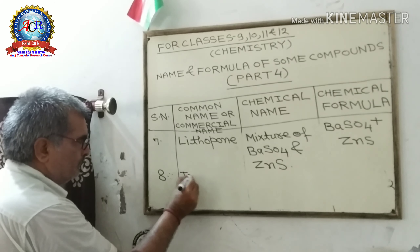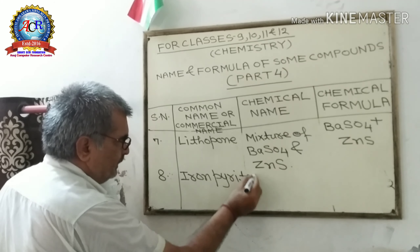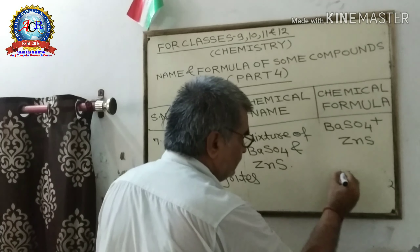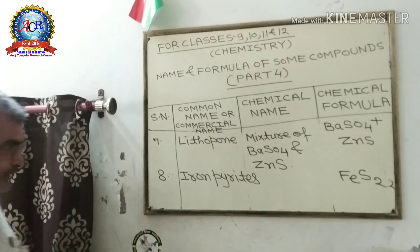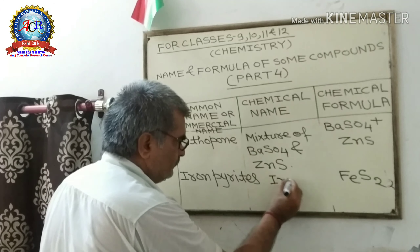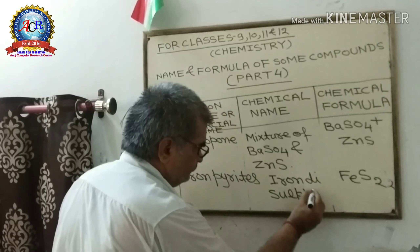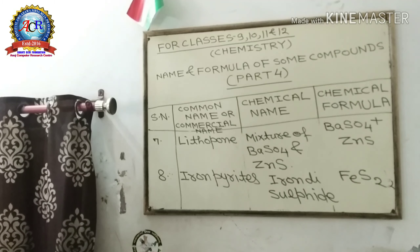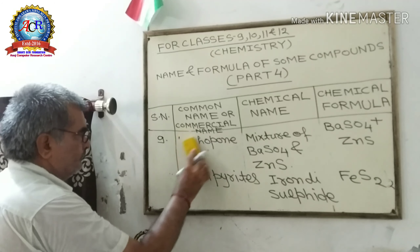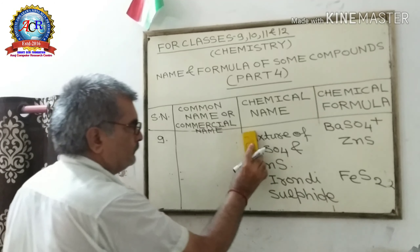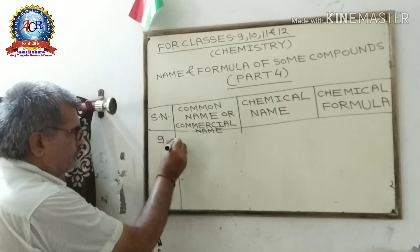Eighth: Iron Pyrites. This is the commercial name or common name. Its formula is FeS₂. Its chemical name is Iron Disulphide.